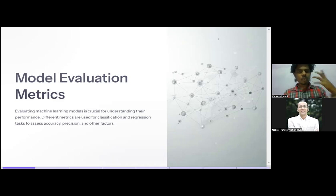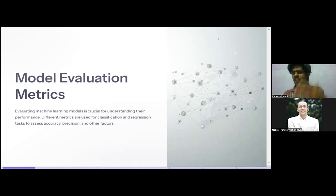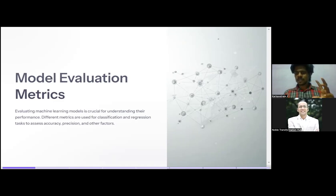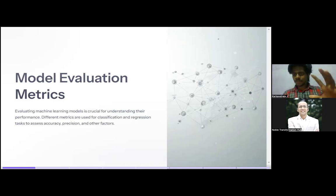Today's session is on model evaluation metrics. Evaluating machine learning models is crucial for understanding their performance. Different metrics are used for classification and regression tasks to assess accuracy, precision, and other factors. Whenever we are done with a model, we need to find how our model works — and we can only find that through metrics. For classification we use accuracy score; for regression we use R² score. There are different kinds of evaluation metrics, and we will discuss all of them today.